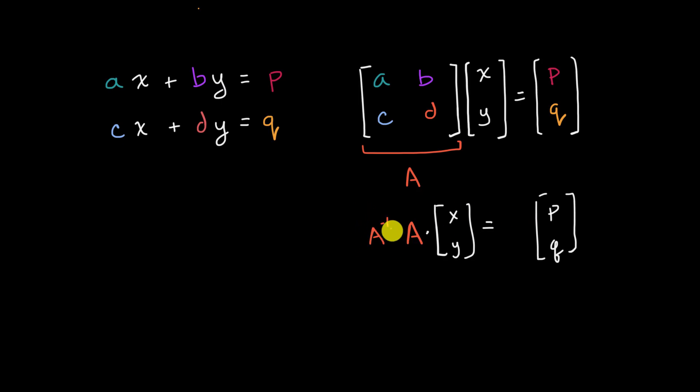what if we multiplied both sides on the left by the inverse of A? So if I had A inverse here, and if I multiplied by A inverse here, what would happen? Well, assuming A inverse exists, and that's actually going to be the focus of this video, if A inverse exists,